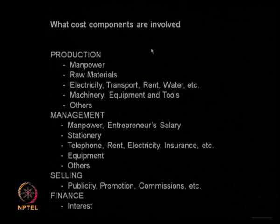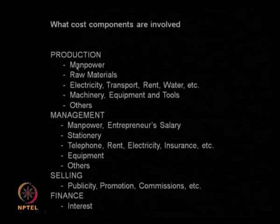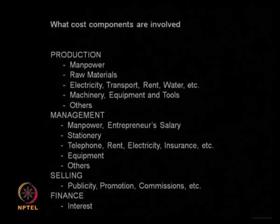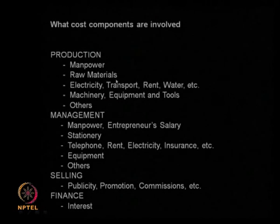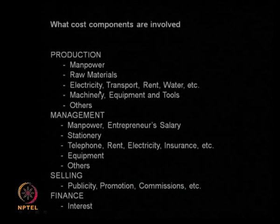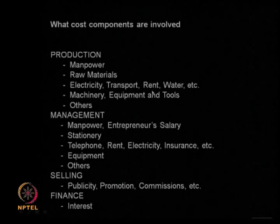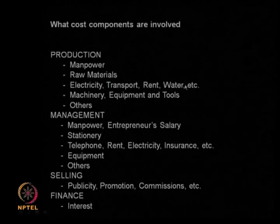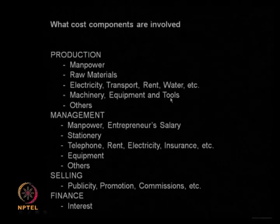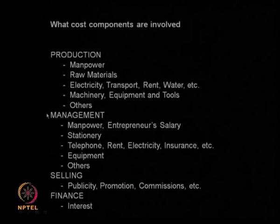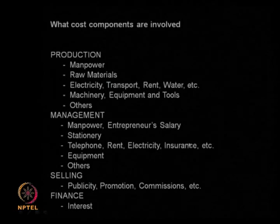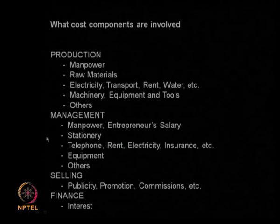What cost components are involved? Let us look at the various components in a manufacturing process. When I am going to produce, I need manpower - technicians, supervisors, floor managers, general managers. I will require raw materials, various raw materials, media components, carbon source, nitrogen source. I will require electricity, transportation. Maybe I am paying rent. So rent cost, water - different types of water: process water, chilled water, cooling water. Then machinery, equipment, tools - all these add up to the production cost. Then I will be spending on management: manpower salary, stationery, telephone, rent, electricity, insurance on my factory, equipment, and raw materials. All these are called management cost.